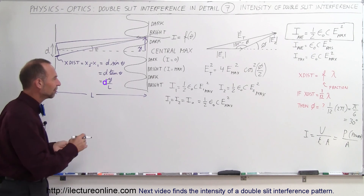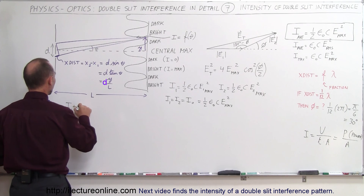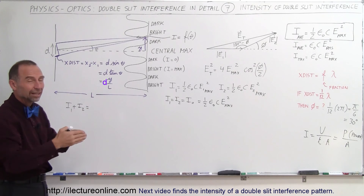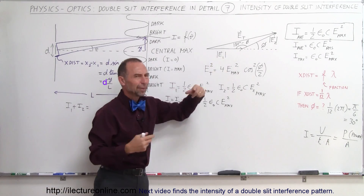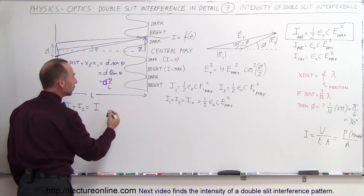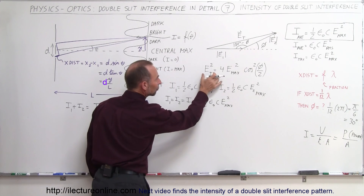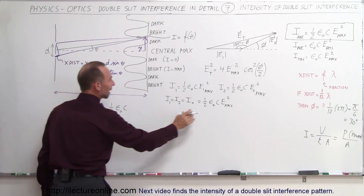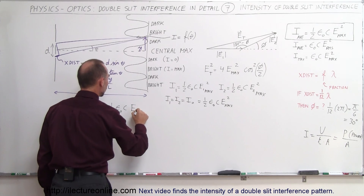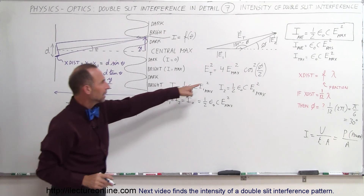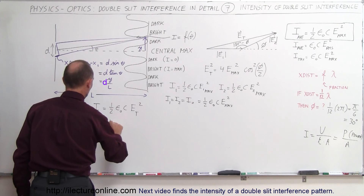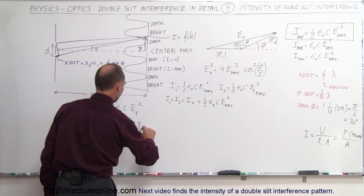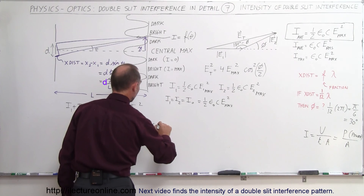So what happens when we add those together? I₁ plus I₂ gives the total intensity I you see along the screen, which depends on how the electric field strengths combine — what phase difference you have and how they're additive. The total intensity will be equal to ½ε₀c times E_total squared. Substituting E_total, the intensity equals one-half epsilon-naught times the speed of light times 4 times E_max squared times cosine squared of phi over 2.